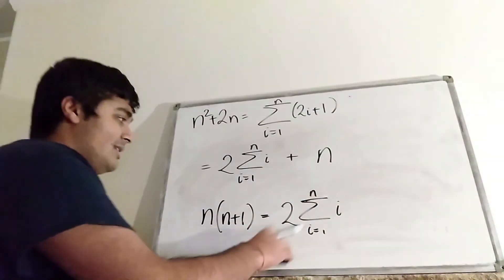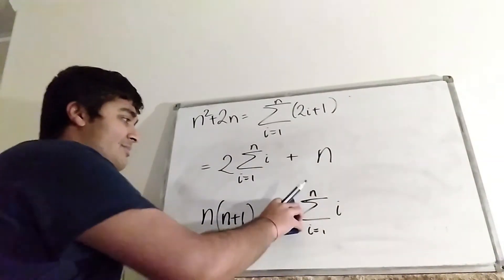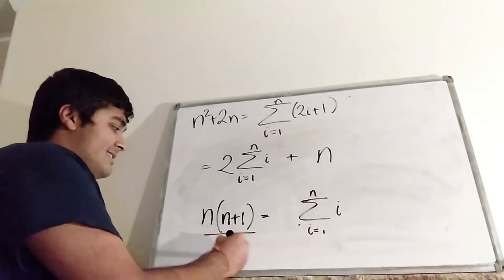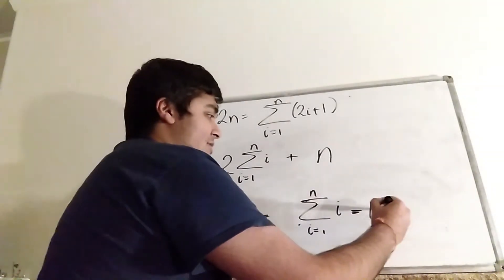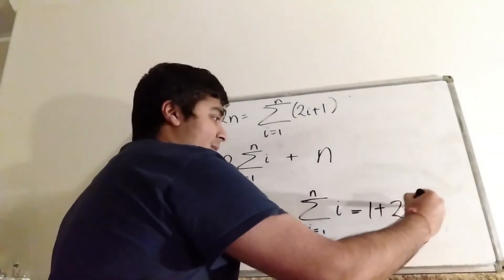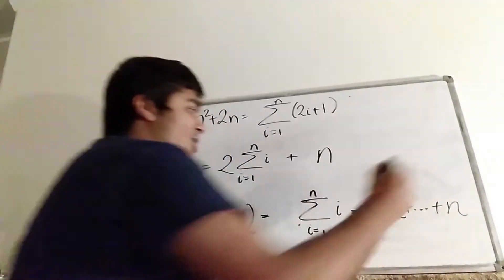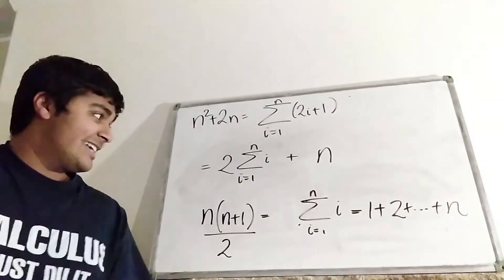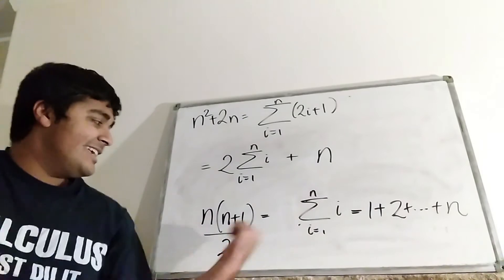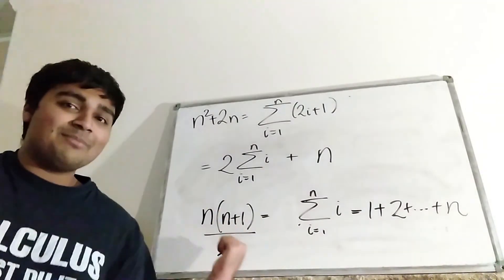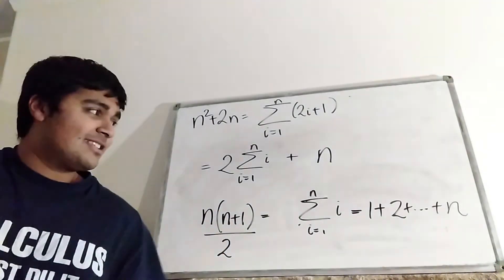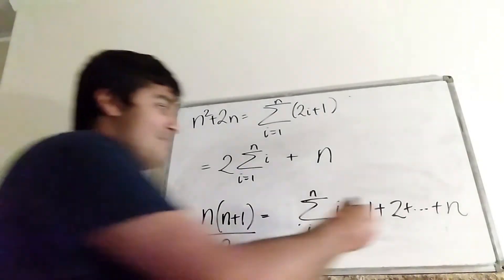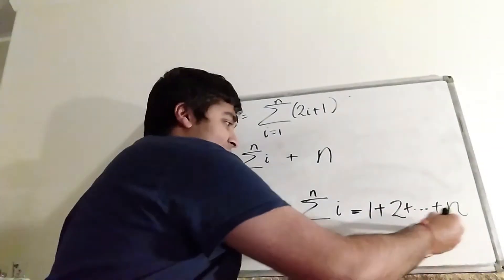Dividing by 2 gives us that the sum from i equals 1 to n of i equals n times (n+1) over 2. And of course this sum is just 1 plus 2 plus ... plus n, and we get exactly the result we expect: it equals n(n+1)/2. That's the proof complete — let's draw a little box there.